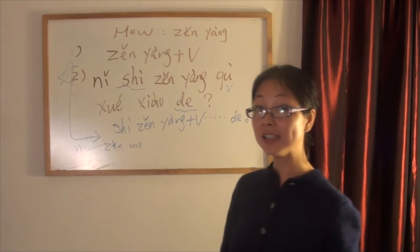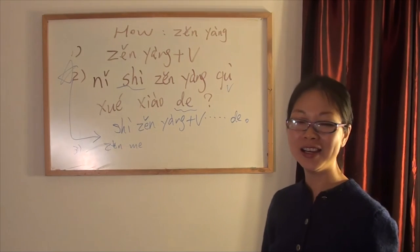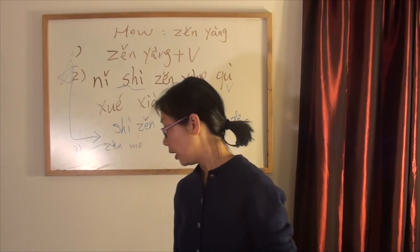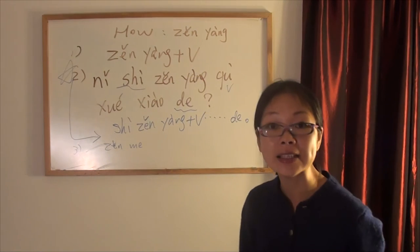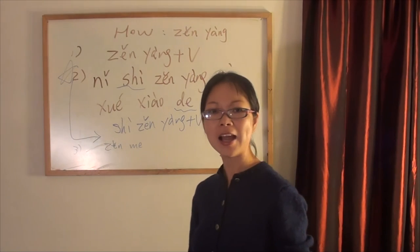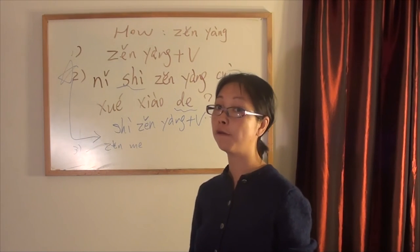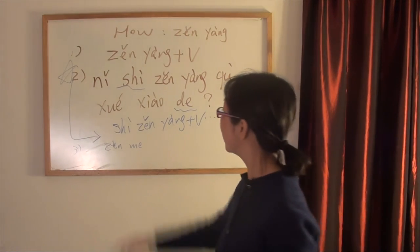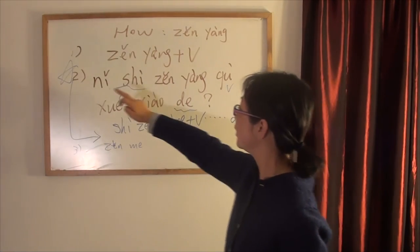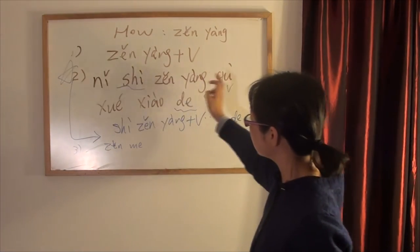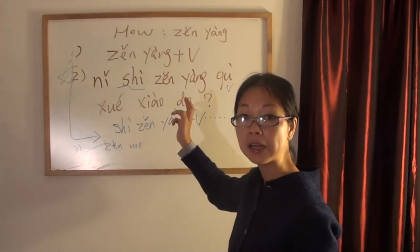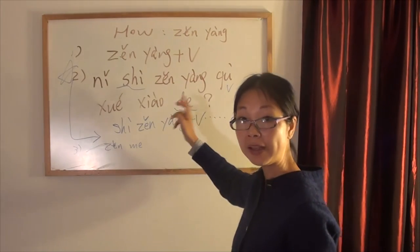你是怎样学中文的? — I learnt that from 5-Minute Chinese. Next example: How did you cook that? 做饭 means 'cook' or 'food/rice.' So: 你是怎样做饭的? or 你是怎么做饭的?